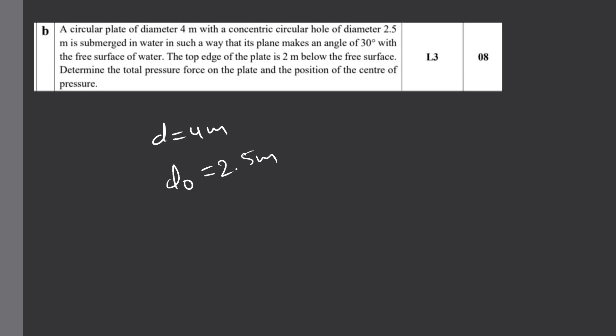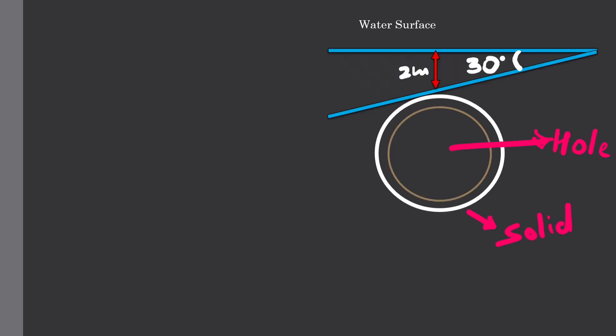With an angle of 30 degrees, so θ equals 30 degrees. The top edge of the plate is 2 meters below the free surface. h₀ equals 2 meters.